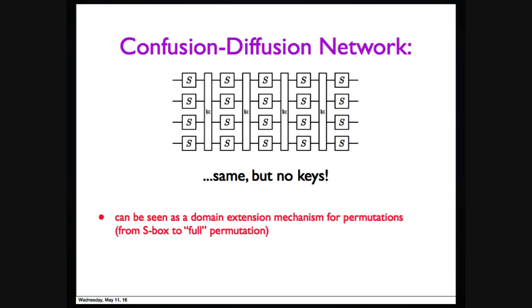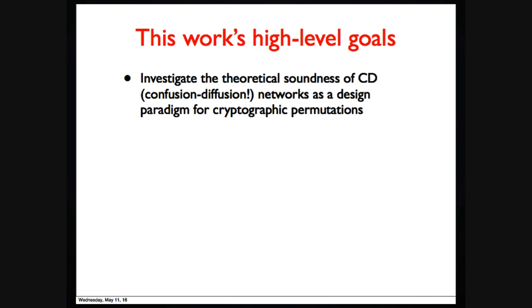So we consider it's a domain extension, like you have a nice permutation, small permutation. How could you construct a nice permutation over a large domain? And the confusion-diffusion terminology goes back to Shannon. This design paradigm is credited to Feistel. So the goal of our work: we want to explore the theoretical soundness of confusion-diffusion network as a way to construct cryptographically secure permutations.